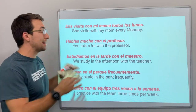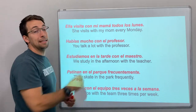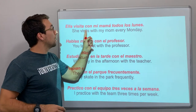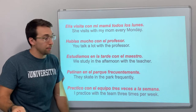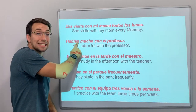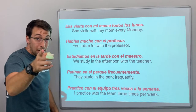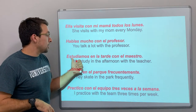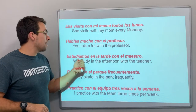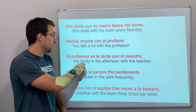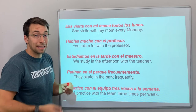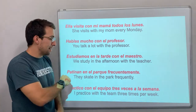Last five examples. Ella visita con mi mamá todos los lunes — she visits with my mom every Monday. Visitar is an AR verb; ella visita ends in 'a.' ¿Hablas mucho con el profesor? — you talk a lot with the professor, because hablas ends in 'as.' Estudiamos en la tarde con el maestro — we study in the afternoon with the teacher; amos means we. Patinan en el parque frecuentemente — they skate in the park frequently; patinar is to skate.